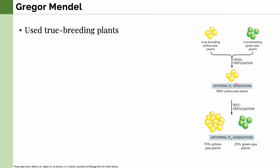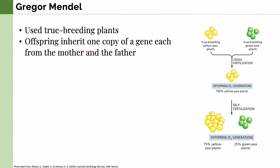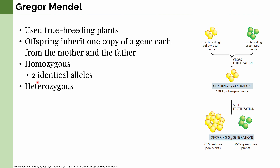But he didn't stop there. He further cross-bred the F1 generation with itself, and as a result, he found that the offspring were two colors — yellow and green. This led him to believe that offspring inherit one copy of a gene each from the mother and the father. He also found that offspring were either homozygous, containing two identical alleles, or heterozygous, having two distinct alleles. The F1 generation were all heterozygous.